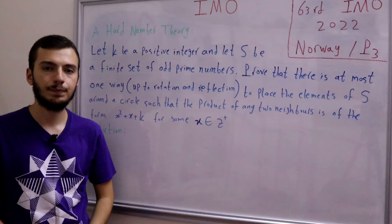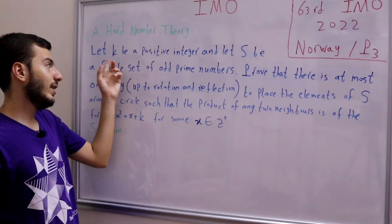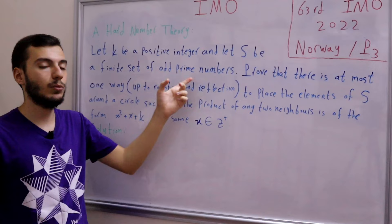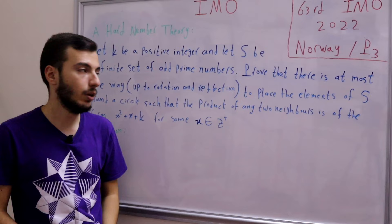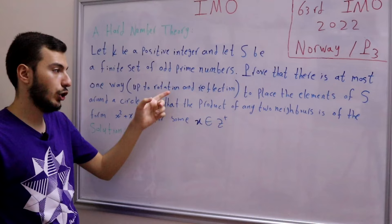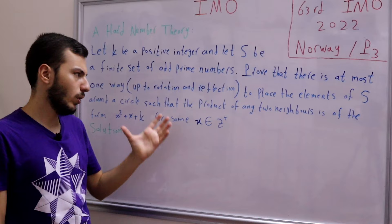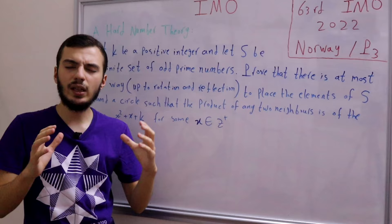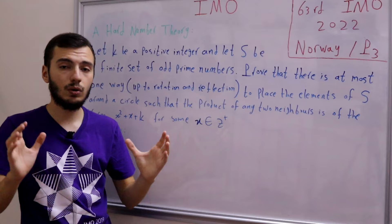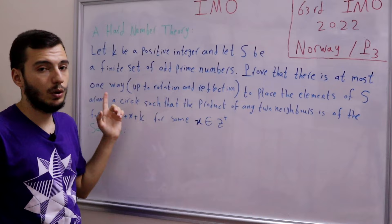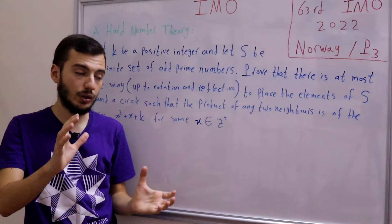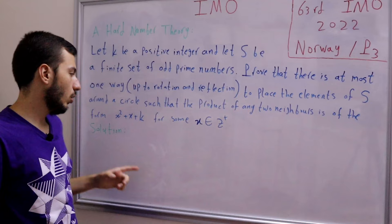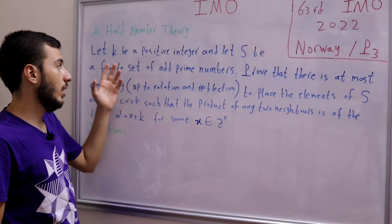The problem statement is: let k be a positive integer and let S be a finite set of odd prime numbers. We need to prove that there is at most one way — up to rotation and reflection — to place the elements of S around a circle, such that the product of any two neighbors is of the form x² + x + k for some positive integer x. Here k is fixed, but x can change.